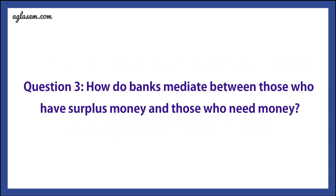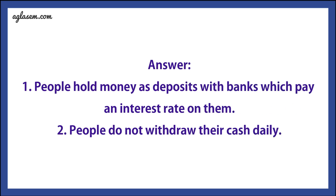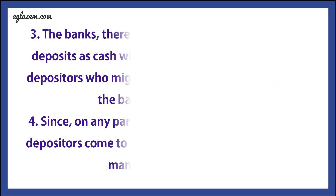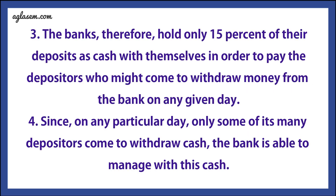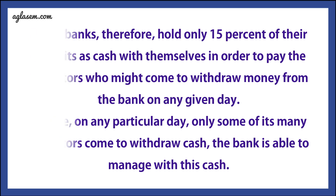Question 3: How do banks mediate between those who have surplus money and those who need money? Answer: First, people hold money as deposits with banks, which pay an interest rate on them. Second, people do not withdraw their cash daily. Third, the bank therefore holds only 15 percent of the deposits as cash to pay depositors who might come to withdraw on any given day. Since only some depositors come to withdraw cash on a particular day, the bank is able to manage with this cash.